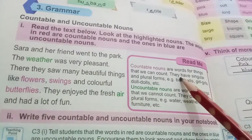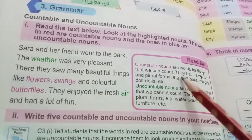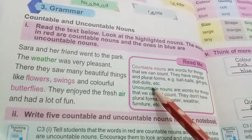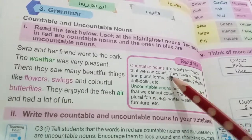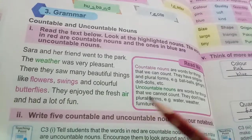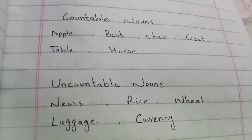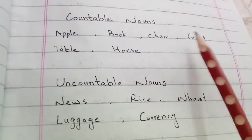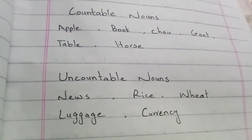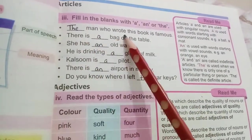Countable nouns are words for things that can be counted — they have singular and plural forms, e.g., ball/balls, girl/girls, doll/dolls. Uncountable nouns cannot be counted, e.g., water, music, furniture. Write five countable and uncountable nouns. Countable nouns: apple, book, chair, goat, table, horse. Uncountable nouns: rice, feed, luggage, currency.